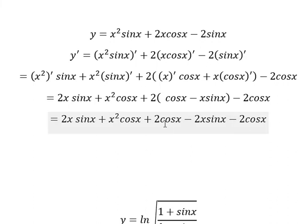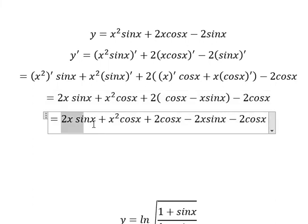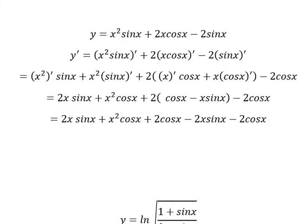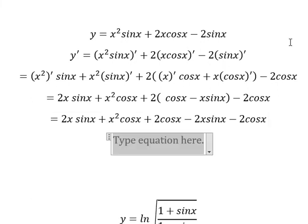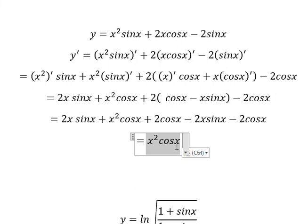So we have 2 cosine x minus 2 cosine x, and negative 2x sine x minus 2x sine x. We simplify and we are left with just one term, and this is the final answer.